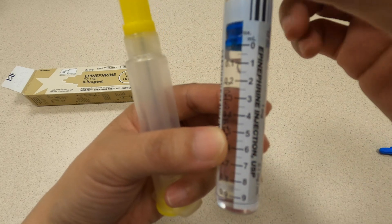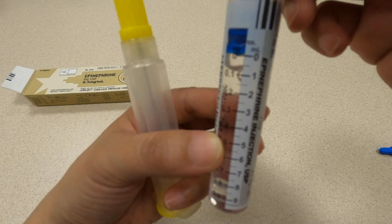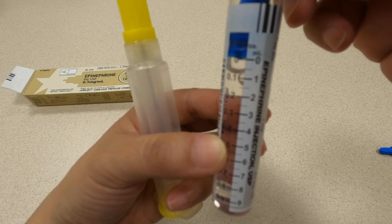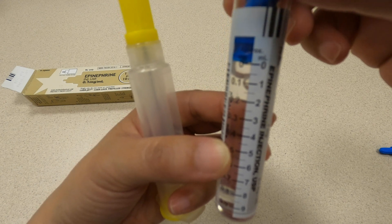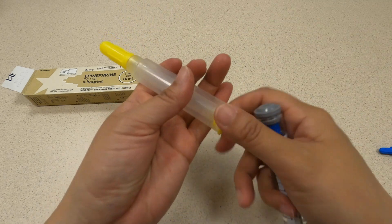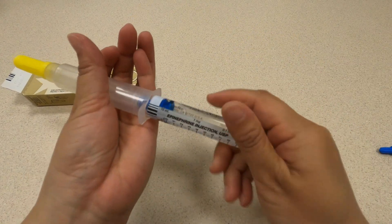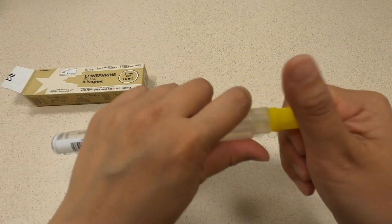It has 10 milliliters in here. For example, if you wanted to draw up 0.9 milliliters for a 9 kilogram patient, because the dosing is 0.1 mls per kilo, it's very difficult to draw up that exact dose. Let's go ahead and get this ready. We'll attach this the way you normally would.